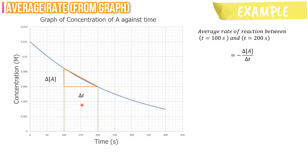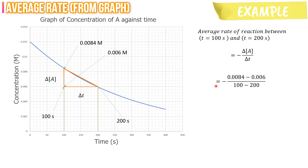The fifth step: label each vertex with the corresponding concentration and time. The final step: plug in these values into the formula and calculate. The average rate of reaction between T equals to 100 seconds and T equals to 200 seconds is 2.4 times 10 to the minus 5 molar per second.